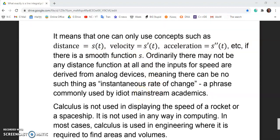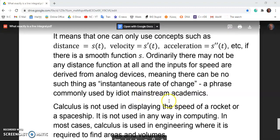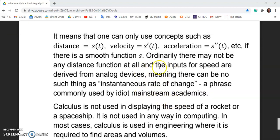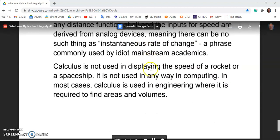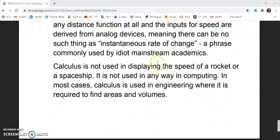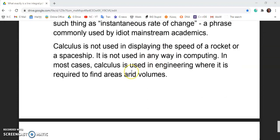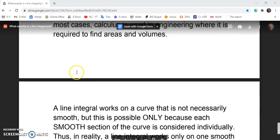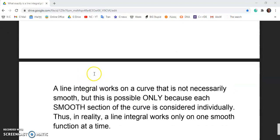There's no such thing as an instantaneous rate of change like that idiot Gilbert Strang from MIT says or any other professor. So it's not possible. And in fact, calculus is not used in displaying the speed of a rocket or a spaceship. It's not used in any way in computing. And in most cases, calculus is used in engineering where it is required to find areas and volumes. In other words, there are smooth functions.